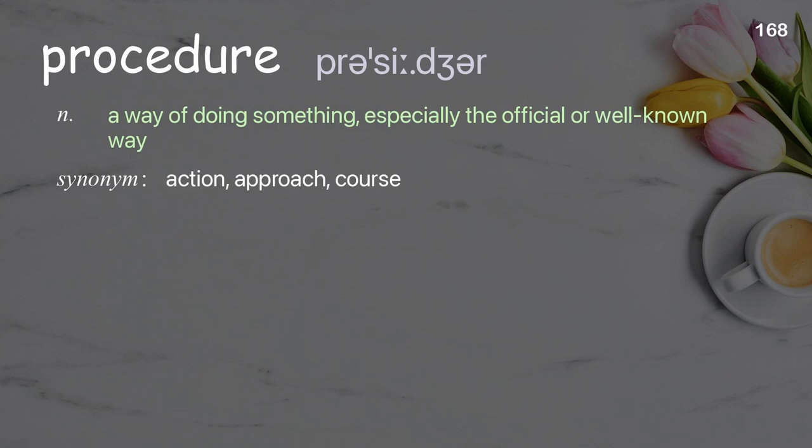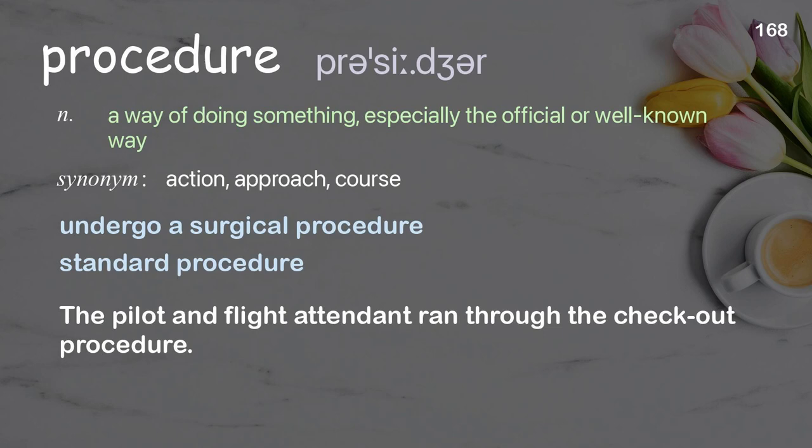Procedure. A way of doing something, especially the official or well-known way. Examples: undergo a surgical procedure, standard procedure. The pilot and flight attendant ran through the checkout procedure.